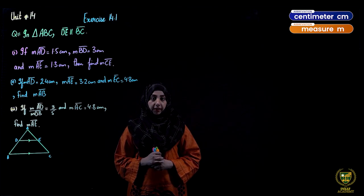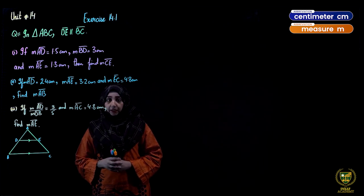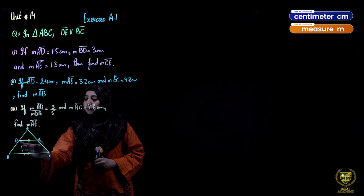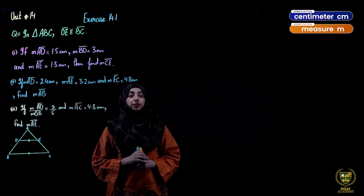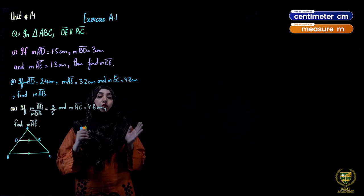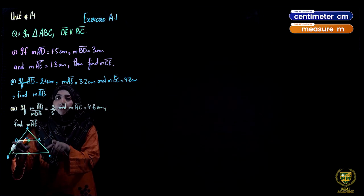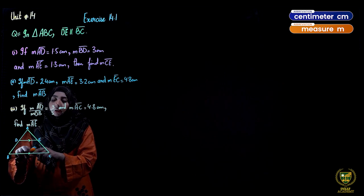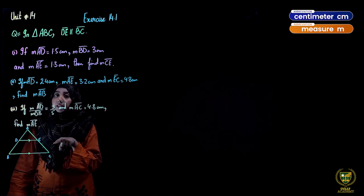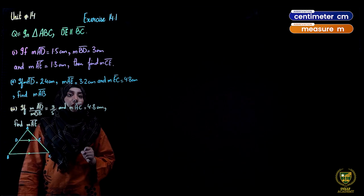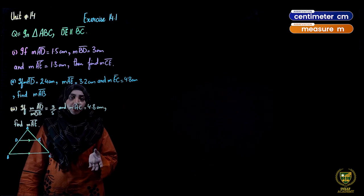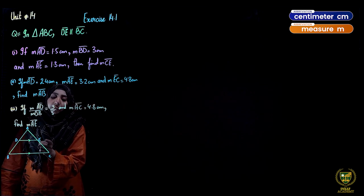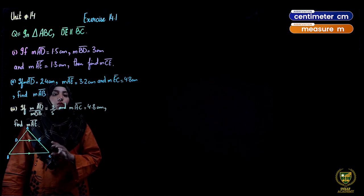Let's move towards the light board. Exercise 14.1, Question 1: In triangle ABC, DE is parallel to BC. We have two theorems — their statements and converses. From both theorems we concluded: if a line is parallel to one side of a triangle, the remaining two sides become proportional. That means AE upon EC equals AD upon DB.